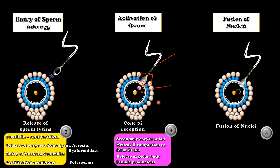The third step is activation of the ovum. The female gamete released during ovulation is a secondary oocyte, which has just completed metaphase 1 of meiosis 1. Entry of the sperm into the ovum stimulates the secondary oocyte to quickly complete its second meiosis, forming a mature or definitive ovum. The nucleus is now called the female pronucleus.